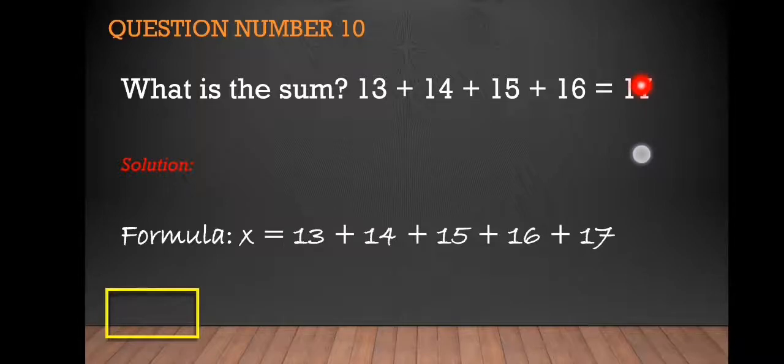If you notice, when we add 13 and 17, the total is 30. When we add 14 and 16, the total is 30, and 15 will remain.